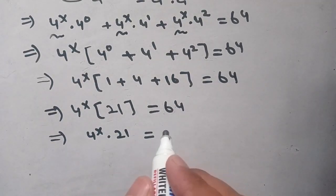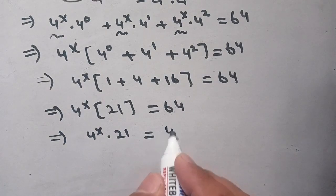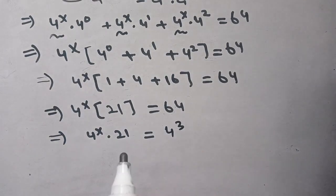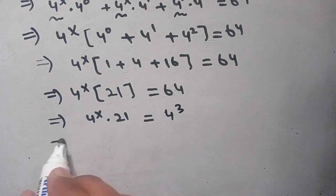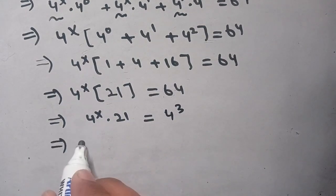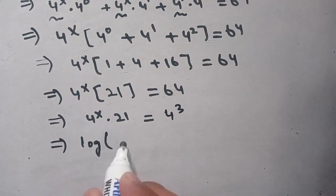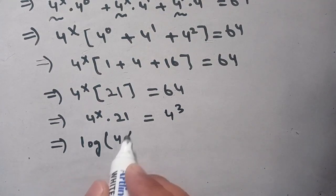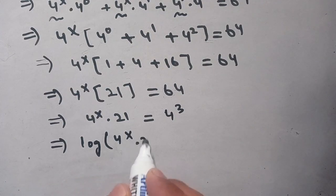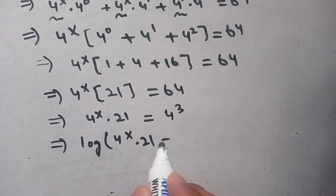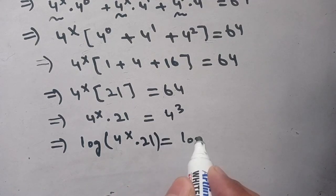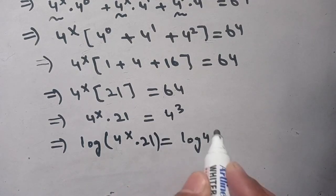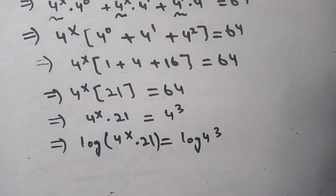Note that 64 can be written as 4^3. Now we take log on both sides: log of (4^x times 21) equals log of 4^3.